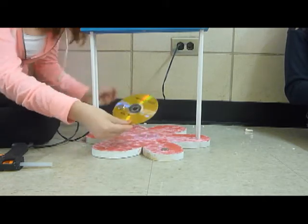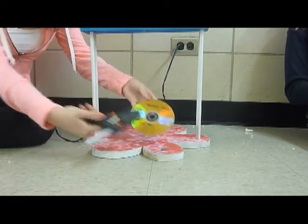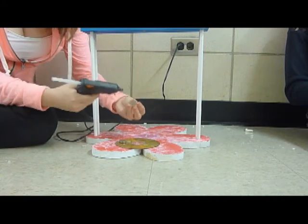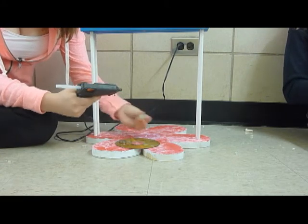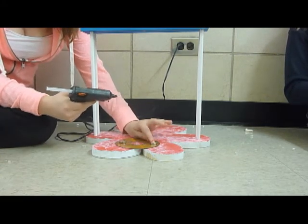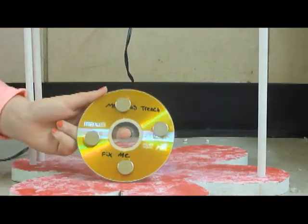Here we have four rare earth magnets and one CD. We're going to glue them equal distance apart, arranging them with opposite polarities beside each other. Here's our finished CD.